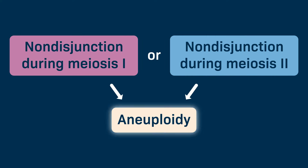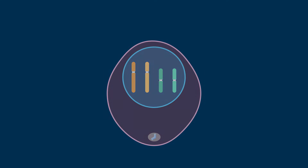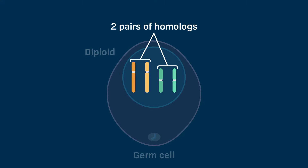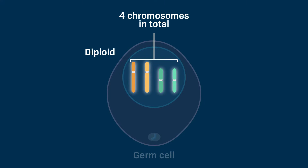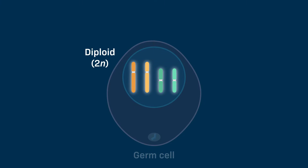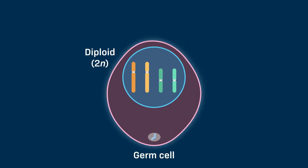To find out more about how aneuploidy arises, we'll use a hypothetical example of a diploid germ cell that has two pairs of homologues. The total number of chromosomes in diploid cells is designated as 2n, so we refer to this hypothetical germ cell as being 2n equals 4.